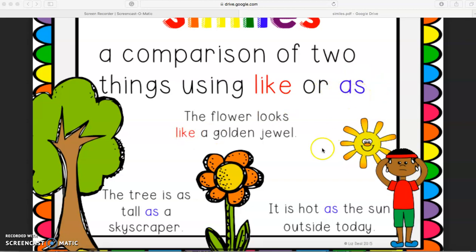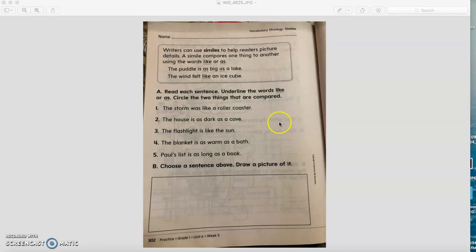Now boys and girls, grab your term book and open it to page 302. Let's read together. Writers can use similes to help readers picture details. A simile compares one thing to another using the words like or as.